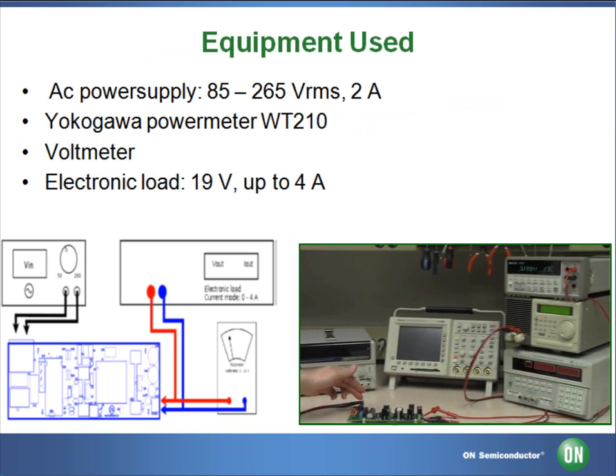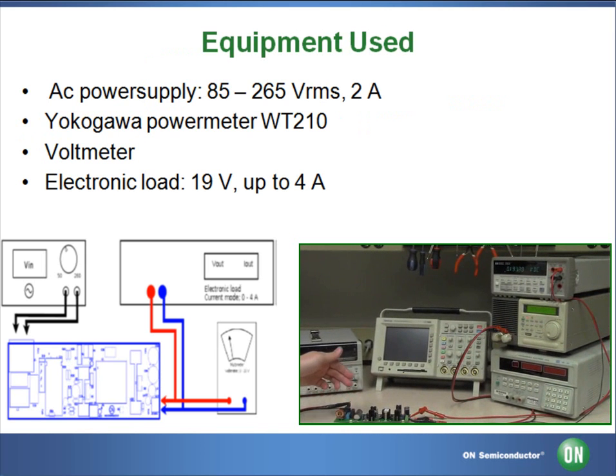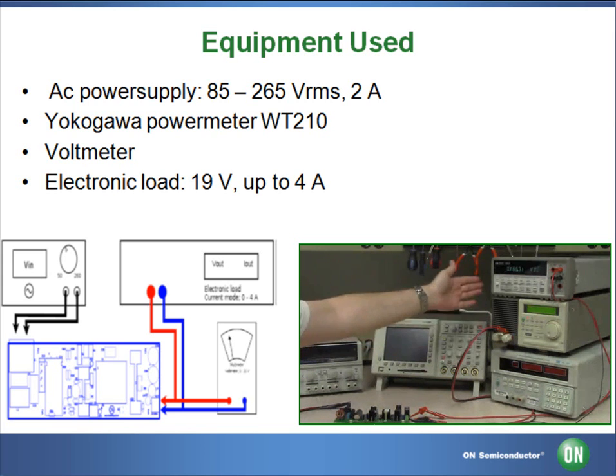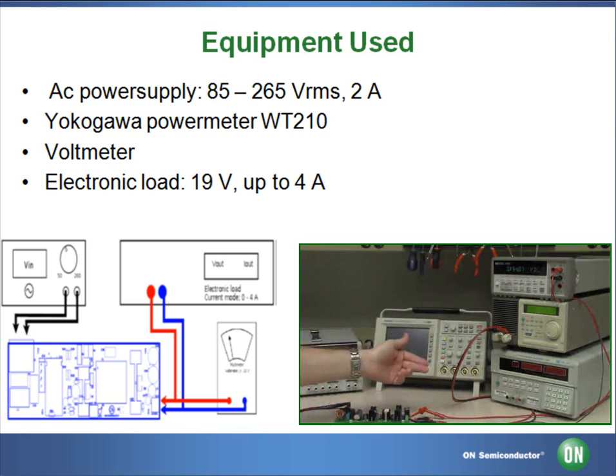That will be connected to the input on our NCP-1380D evaluation board. And then the outputs, both our red positive and our black negative, are going to go to our DC electronic load. And finally, we'll be using a voltmeter to measure our output voltage down at our terminal outputs.